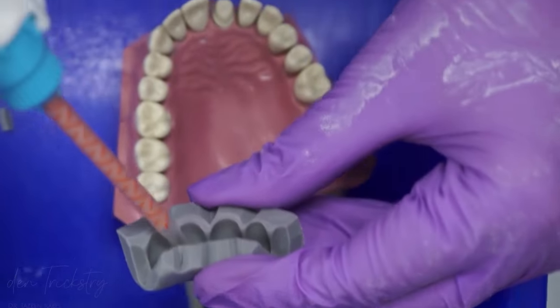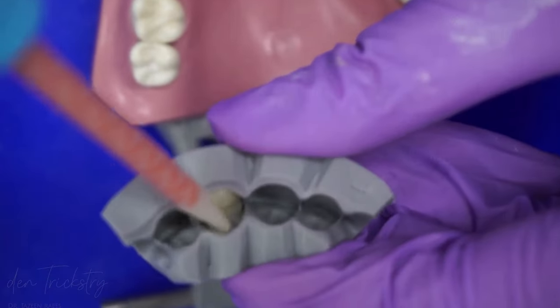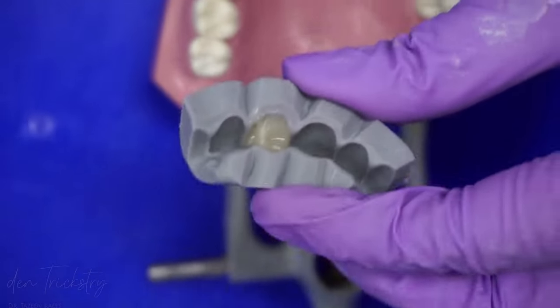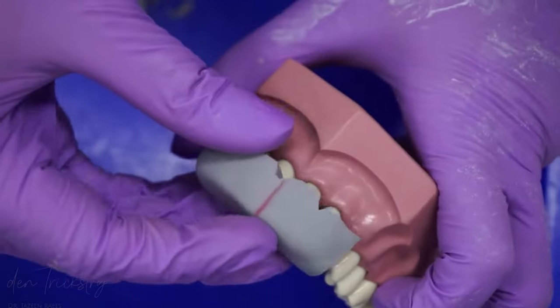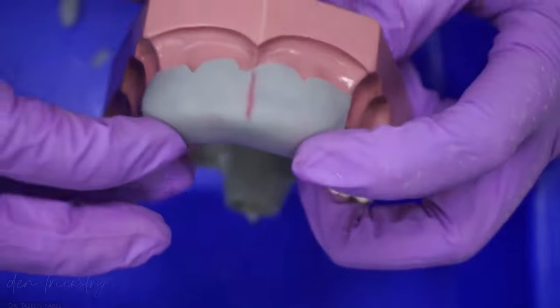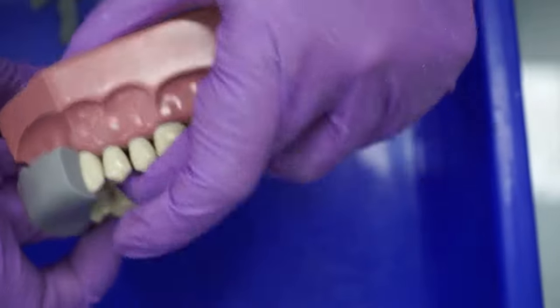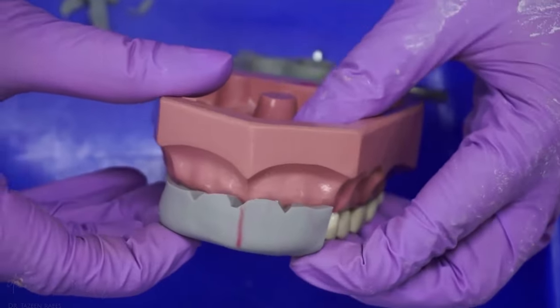Then go ahead with expressing the material into the index. Only apply the material for the tooth you want to temporize. In this case, the prepared tooth is our central incisor so placing material only in that area. Once done, quickly place the index on the tooth and make sure you position it properly.